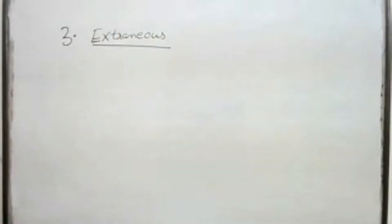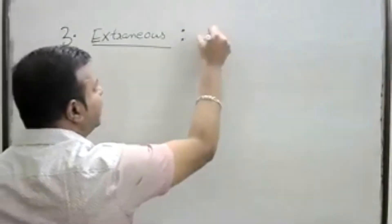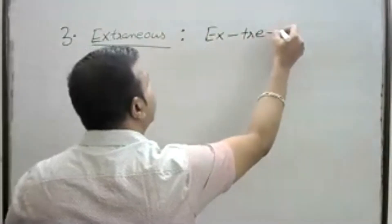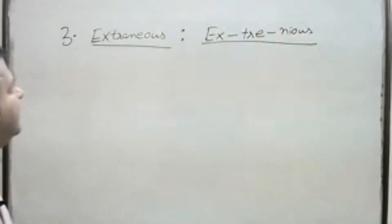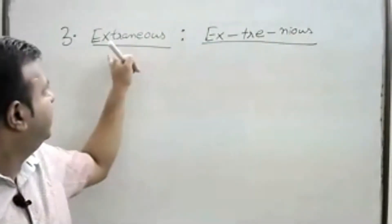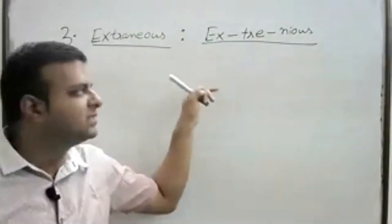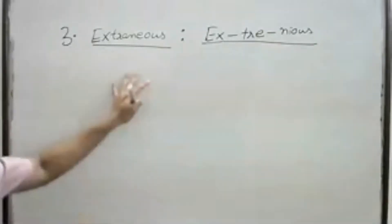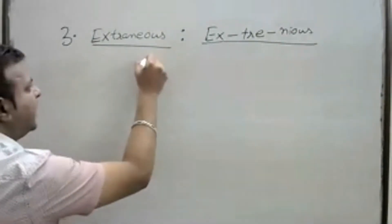Our third word is 'extraneous' — E-X-T-R-A-N-E-O-U-S. It sounds like 'extraneous.' Note the spelling: it's not S-T-R-E but E-X-T-R-A-N-E-O-U-S.